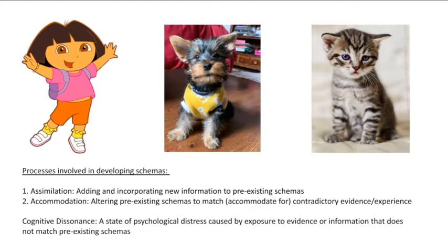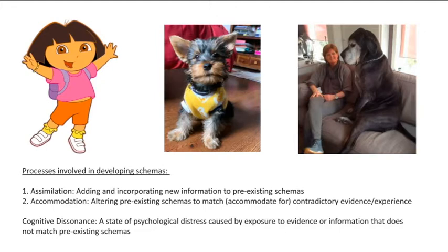Assimilation is when individuals incorporate new information into pre-existing schemas. Now let's say she sees a Great Dane and misinterprets it as a horse, because not all four-legged animals are dogs and Great Danes are much bigger than Yorkies. This child needs to make an accommodation because this information conflicts with her understanding of dogs — her parent tells her the Great Dane is not a horse, it is in fact a dog. She needs to change her representation of dogs from being just small furry four-legged creatures to the possibility that dogs can also be big. Accommodation is the process of altering pre-existing schemas to match new, conflicting information.